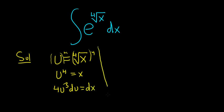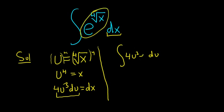All right, now we can make our substitution and see what happens. So dx is 4u cubed du. So we have 4u cubed du. That's just the dx piece. And we're left with e to the u. So this is e to the u.